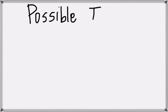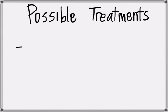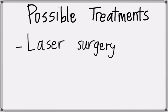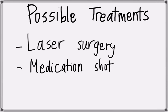What are the possible treatments? One treatment option is laser surgery. Another possible option is a medication that is given as a shot into the baby's eye to slow the abnormal blood vessel growth.